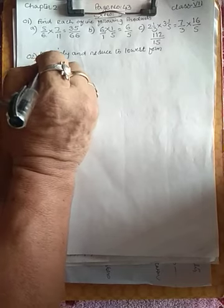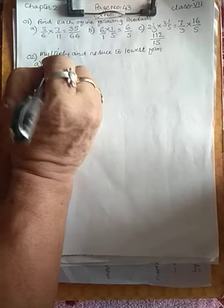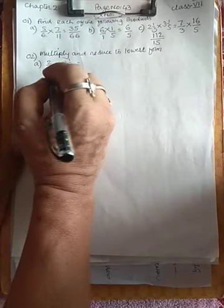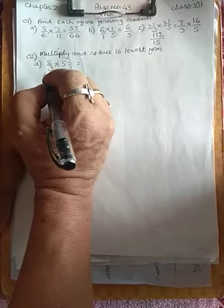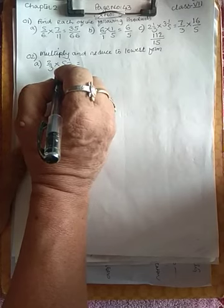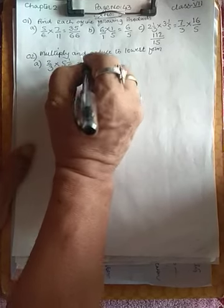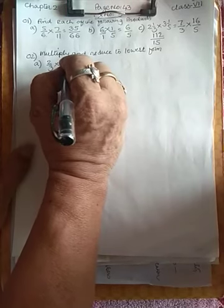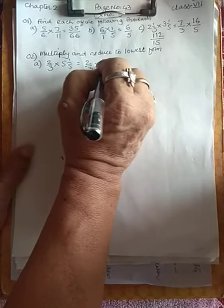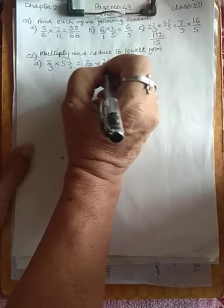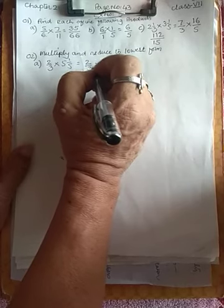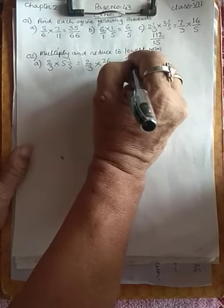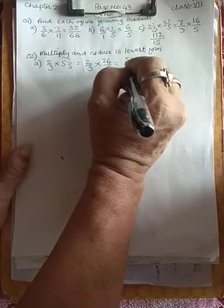First problem: 2/3 into 5 and 1/5. One fraction is a proper fraction and the other is a mixed fraction. Convert the mixed fraction to improper: 5×5+1 = 26/5. Now multiply: 2×26 = 52 by 3×5 = 15. Answer is 52/15.